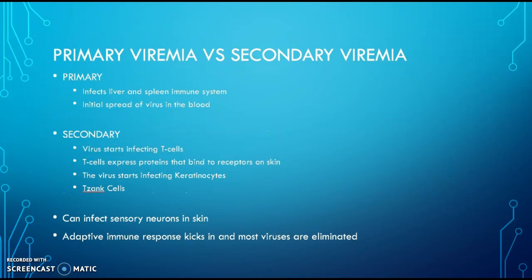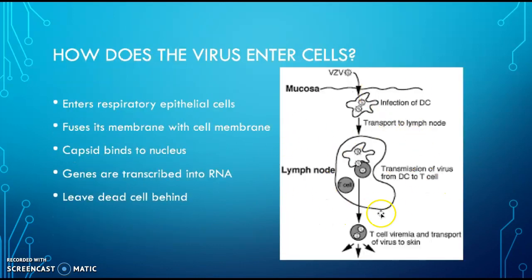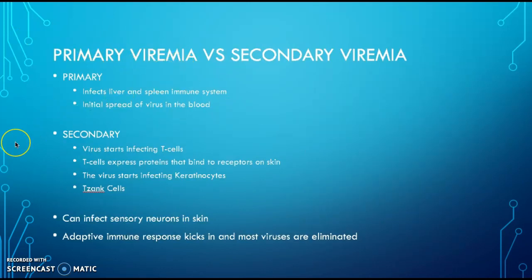After contact with the virus, it's going to replicate in the epithelial cells. It's picked up by immune cells and transported to the lymph nodes. After it infects the lymph nodes, it causes a primary infection called varicella, which is chickenpox. This virus has two stages: primary viremia and secondary viremia. The primary viremia first infects the liver and spleen immune system, called the reticuloendothelial system, which is made of phagocytic cells — it's just the initial spread of the virus in the blood.